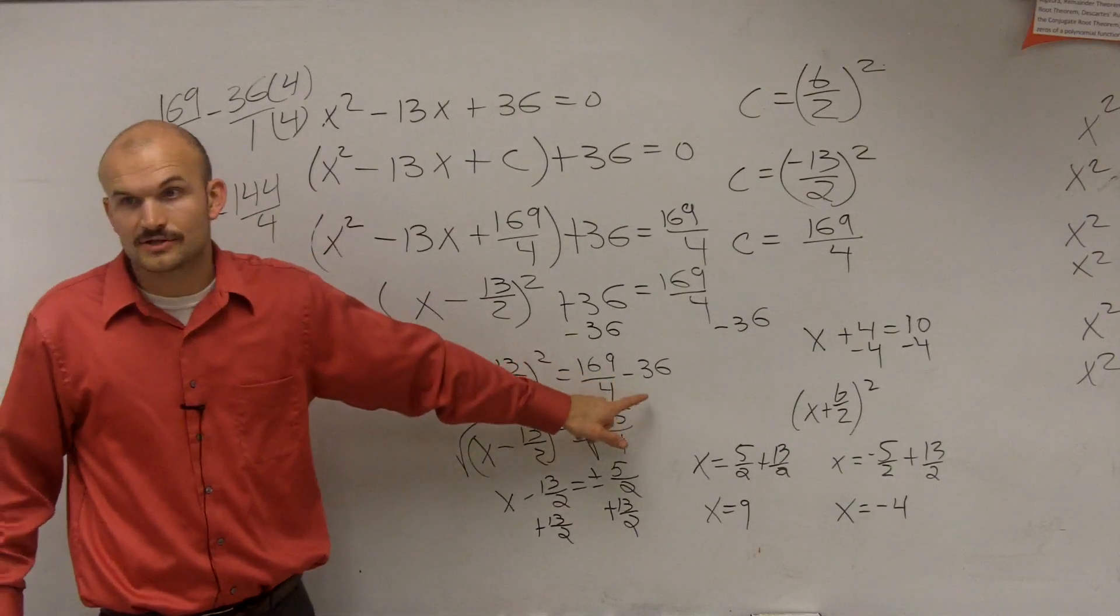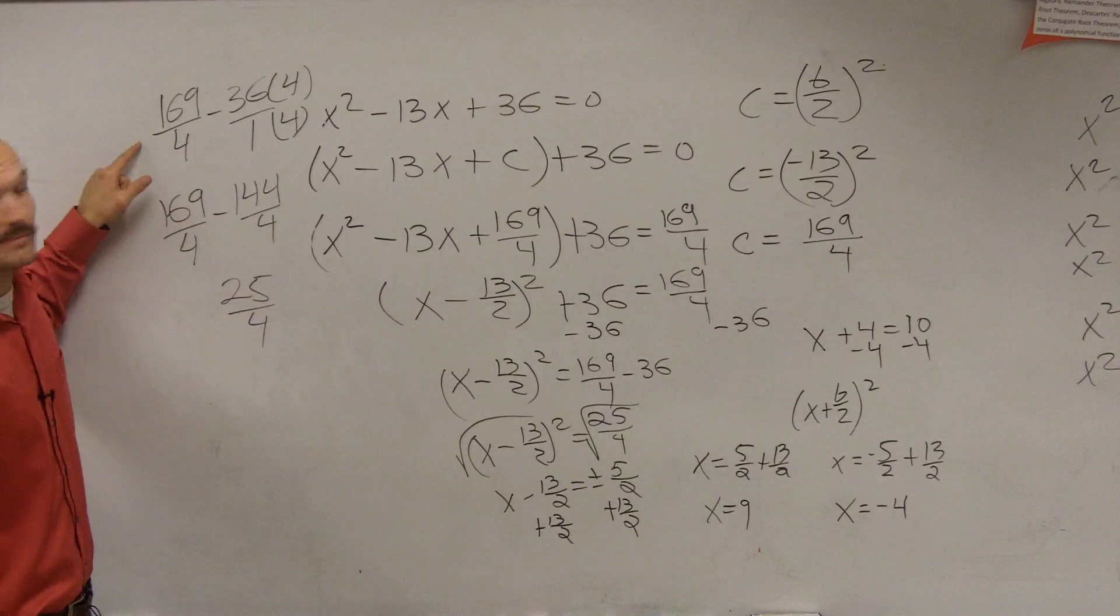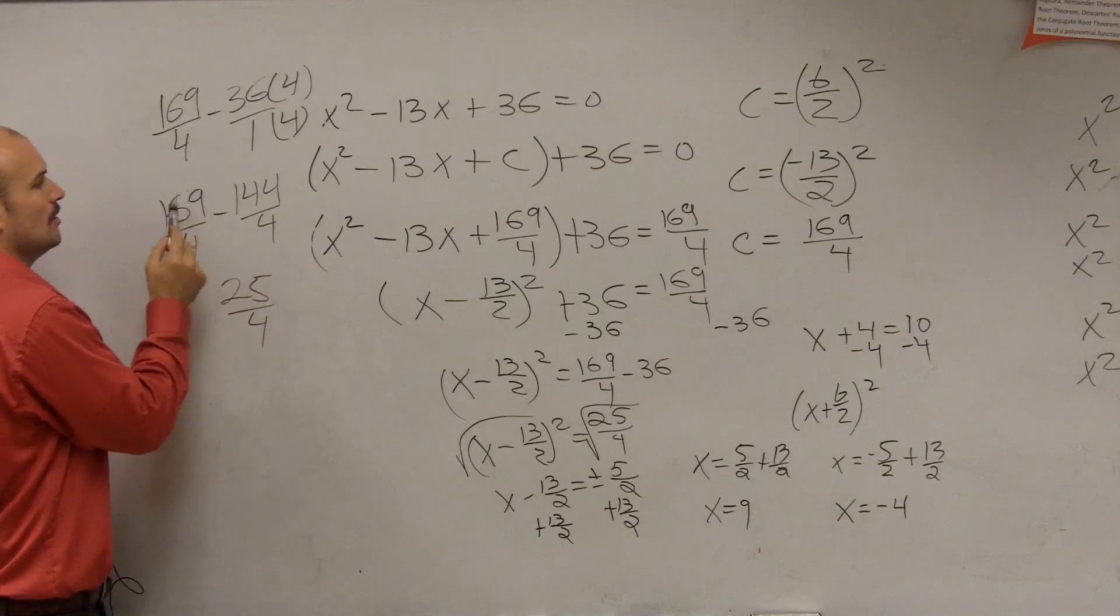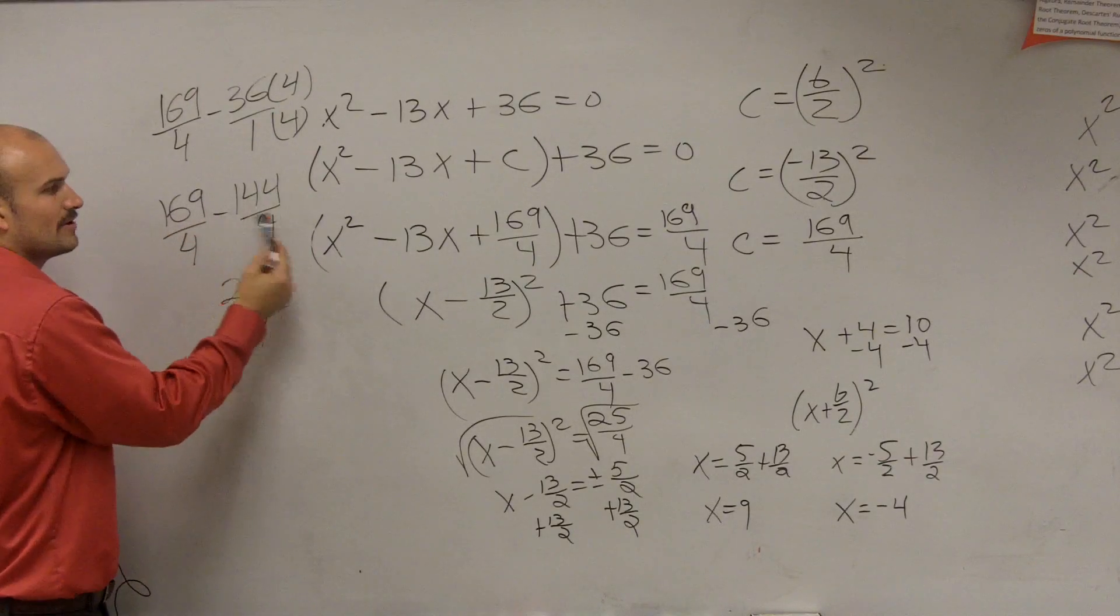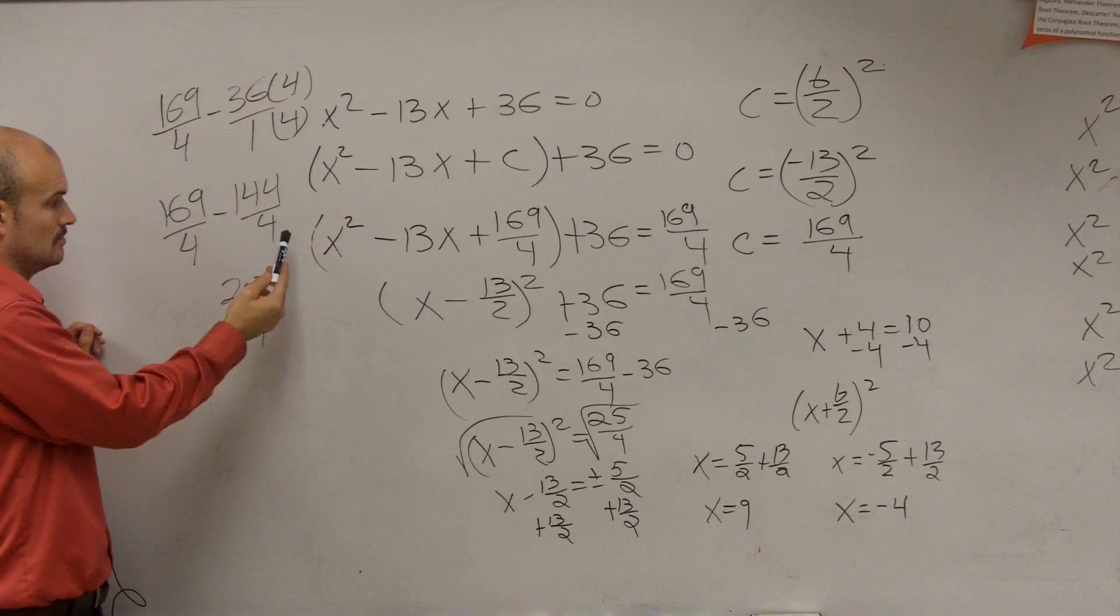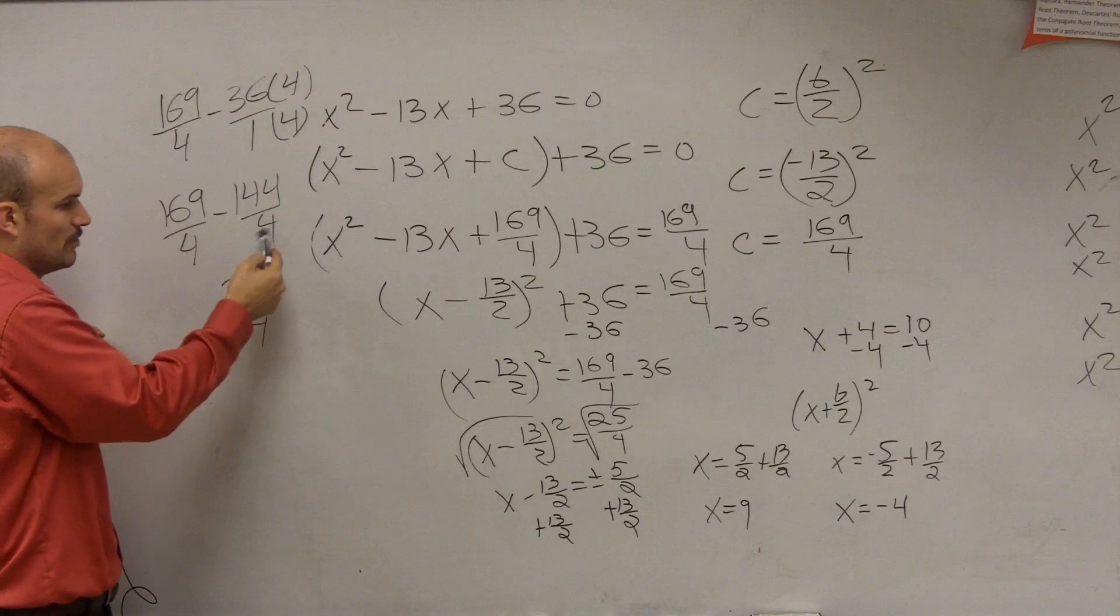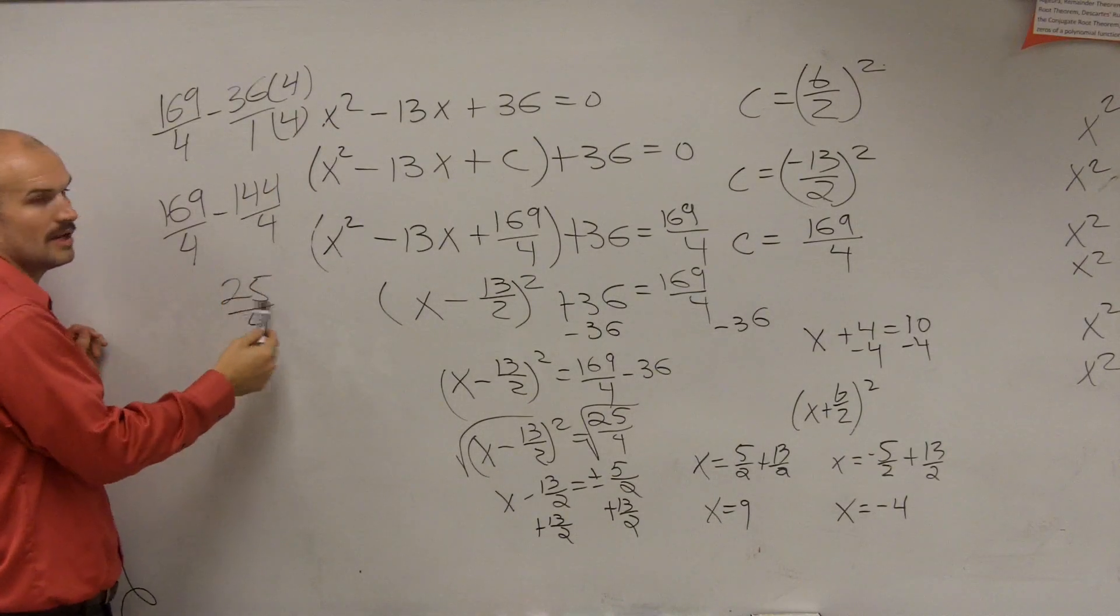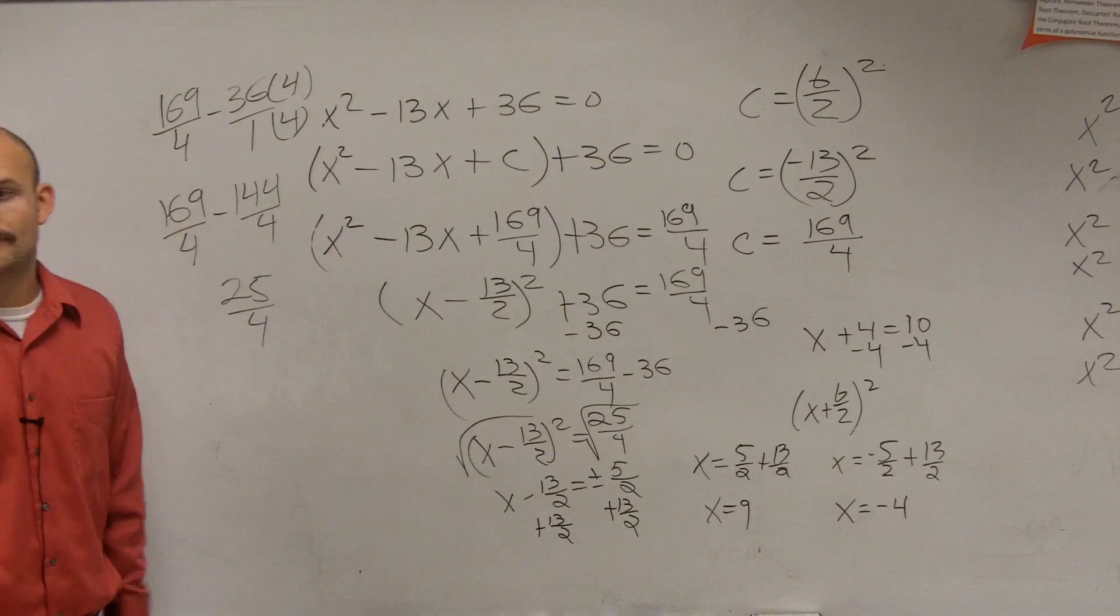169 divided by 4 minus 36, right? You can't subtract fractions unless they have the same denominator. So I multiply by 4 over 4. 169 over 4 minus 144 over 4. Because 36 times 4 is 144. 169 minus 144 is 25. And then the 4 is your same denominator.